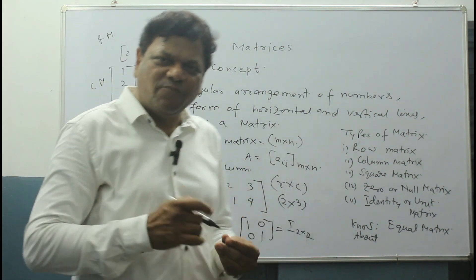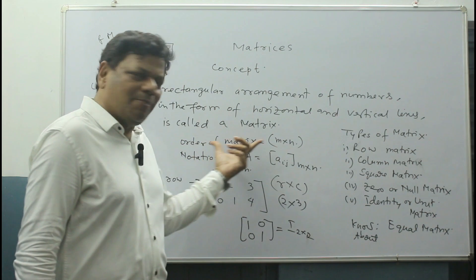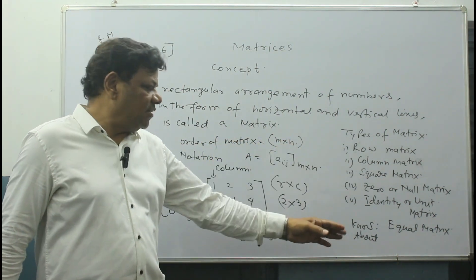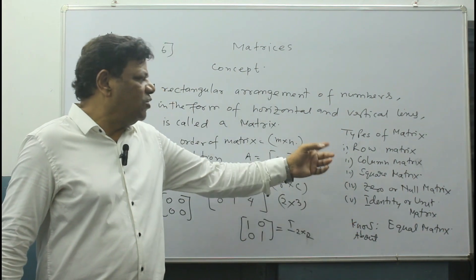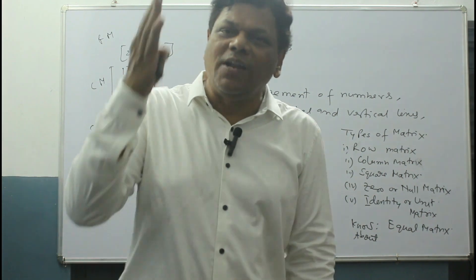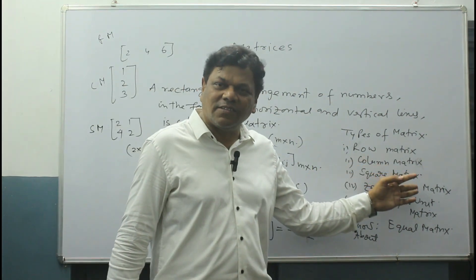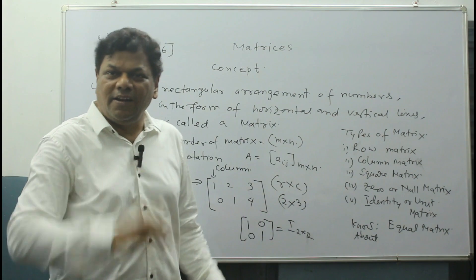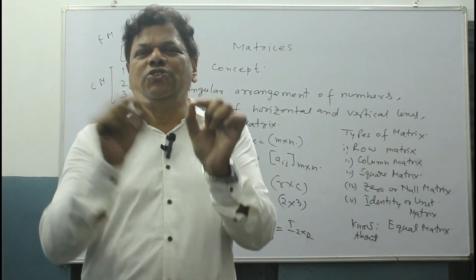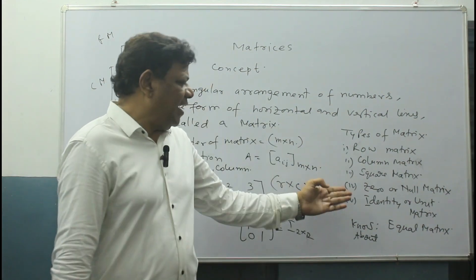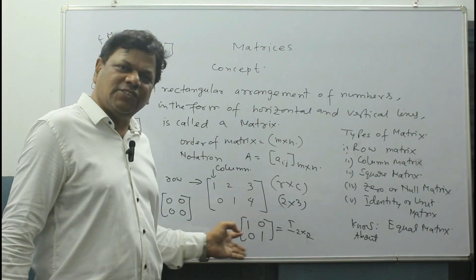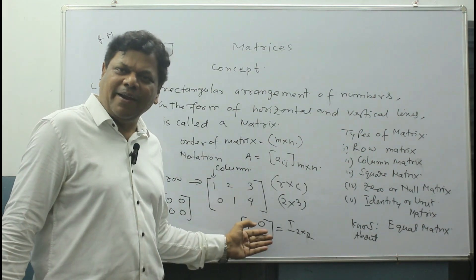Once more, revising for you: we have learnt about the order of matrix, about the notation, and the different types of matrices. Row matrix means only one row is there. Column matrix means only one column is there. Square matrix means row and column are equal. Zero matrix means all are zero. Identity matrix means diagonally 1, 1, 1, 1, and all others are zero. This is the identity matrix. Okay children.